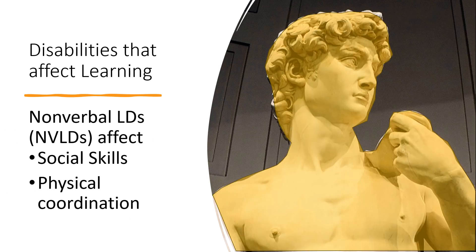Non-verbal learning disabilities affect all learning that is not related to language, including social skills and physical coordination. It is often confused with Asperger's or Autism Spectrum Disorder, which both affect learning but are not a learning disability. Persons with ASD are predominantly visual learners, while persons with NVLD are auditory learners. Someone with NVLD may lack spatial awareness, like reading body cues, and have difficulty with tasks that require fine motor skills.